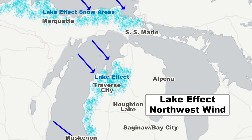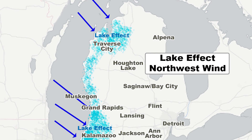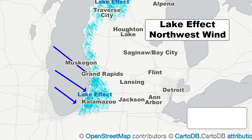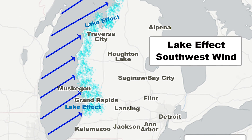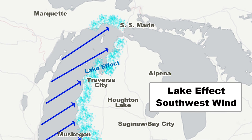Northwest, west, and southwest winds all create lake effect snow in different spots. And if that wind shifts a little bit, it will move the lake effect maybe out of your area.